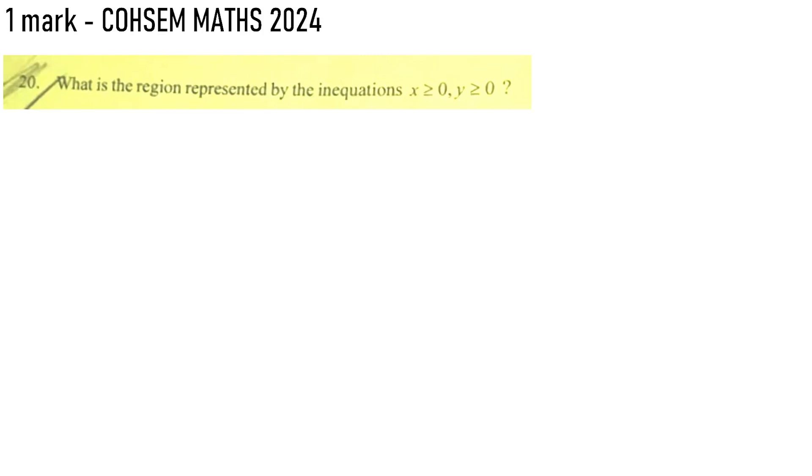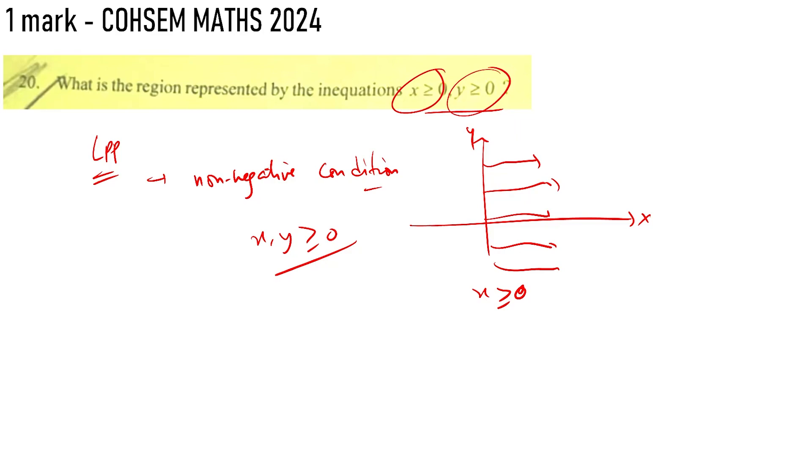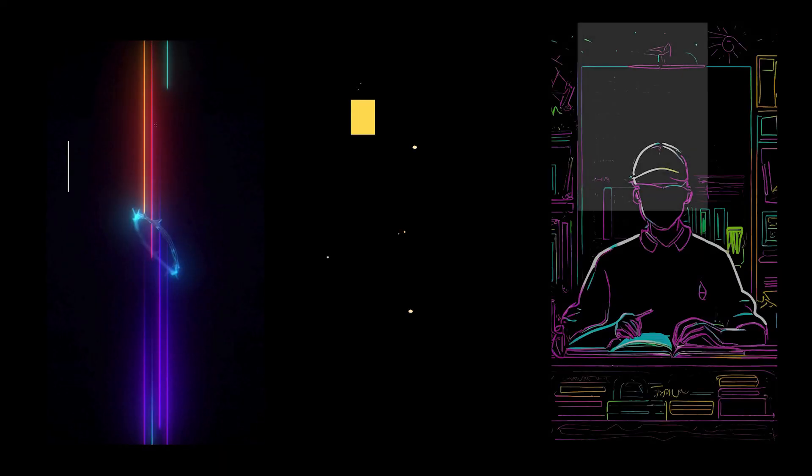It is represented by the non-negative constraint. Non-negative constraint in LPP formulation means all solutions must be positive. All variables x and y must be greater than or equal to 0. x greater than or equal to 0 means any point on this side. This is the first quadrant. This is where x is greater than or equal to 0 and y is greater than or equal to 0.